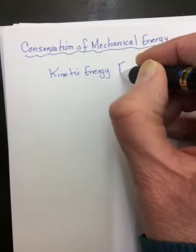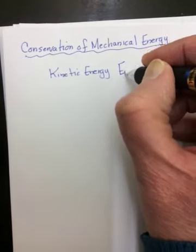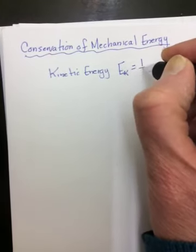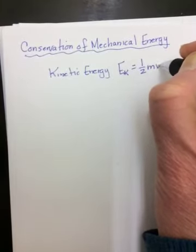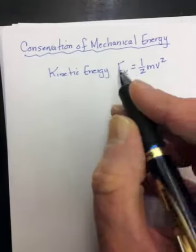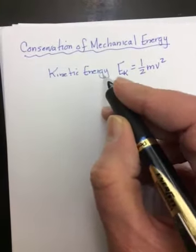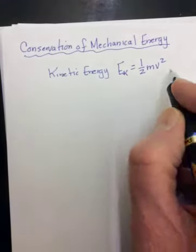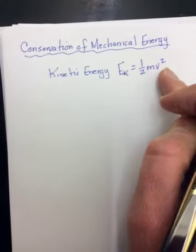One type was known as kinetic energy. And all energy is usually a capital E with a subscript. So kinetic energy was Ek. And hopefully you remember that it was equal to 1 half mv squared. And kinetic energy is known as energy of motion.